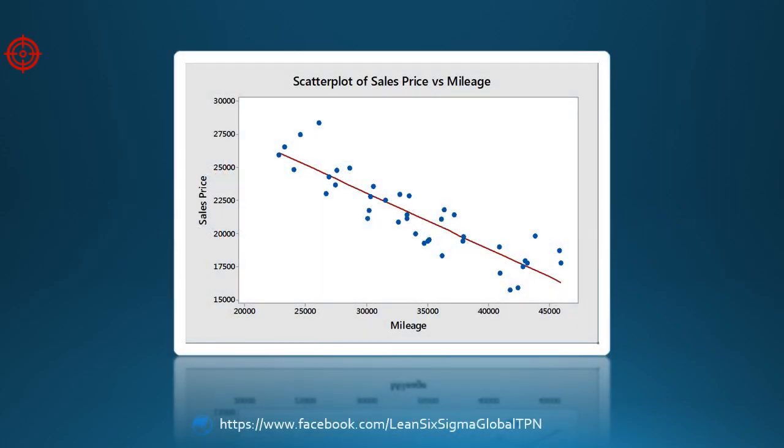We can find the same result by looking at the regression line drawn through the scatter plot. Find the point on the regression line that corresponds to 25,000 miles on the horizontal axis, then draw a straight line over to the vertical axis.